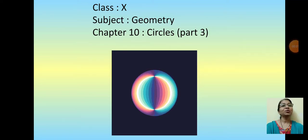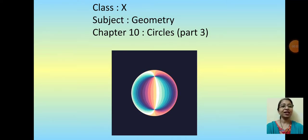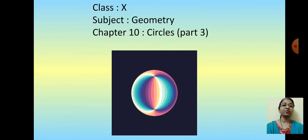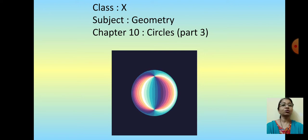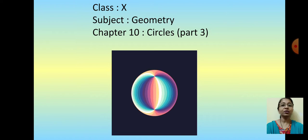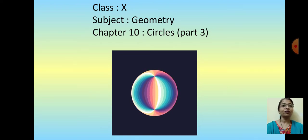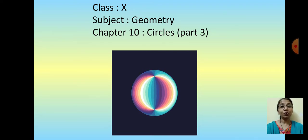Hello students, welcome to standard 10 geometry class, chapter 10 circles, part 3. In the previous class we have seen two very important theorems: the first is that the radius is perpendicular to the tangent at the point of contact, and the second result was that the length of the tangent segments drawn from an exterior point to the circle are equal in length.